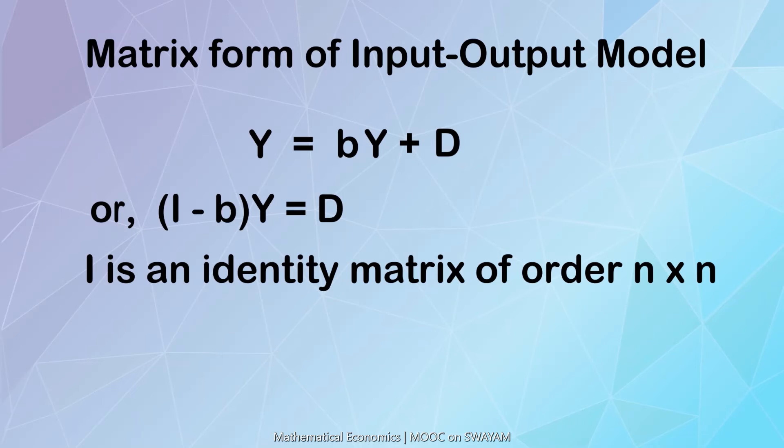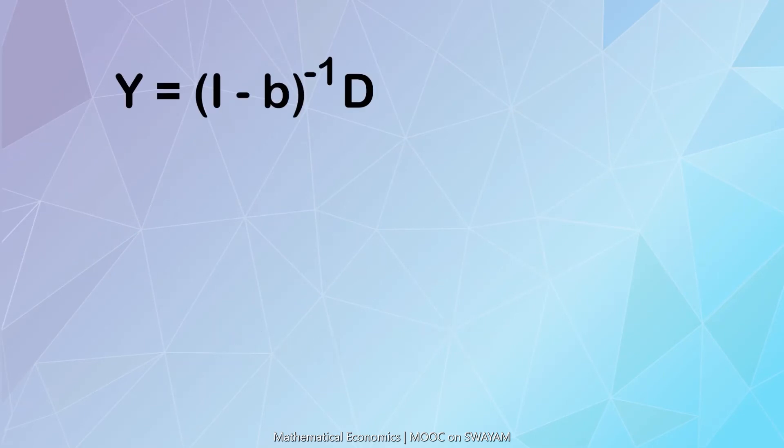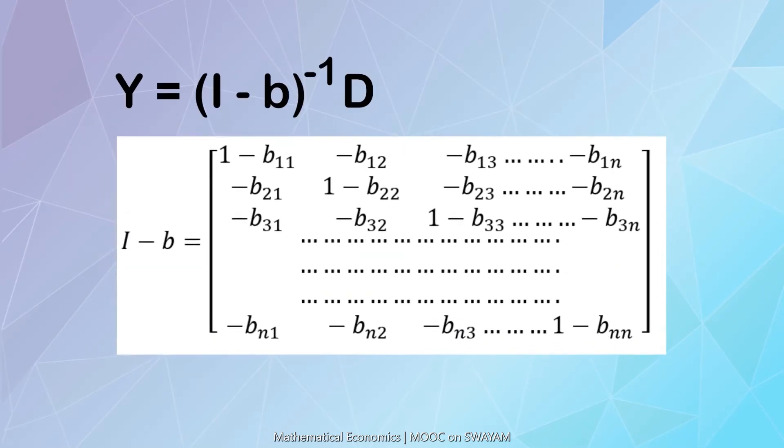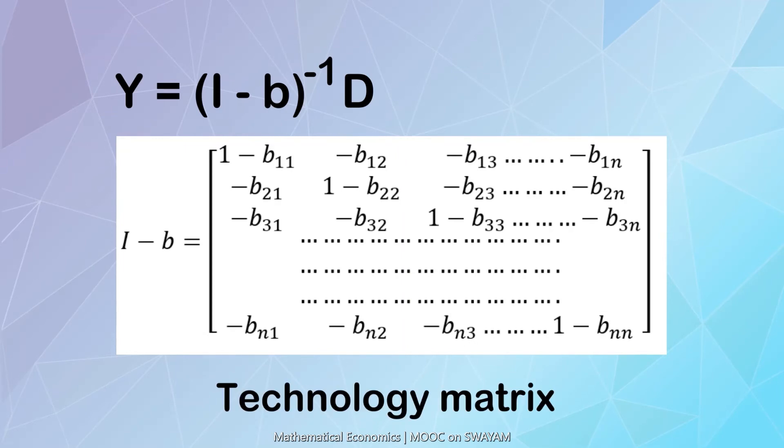Thus, we arrive at the final matrix form of the open input-output model. The matrix I minus b is known as the technology matrix. The inverse of the technology matrix is obtained by using the inverse formula and is known as Leontief inverse matrix.